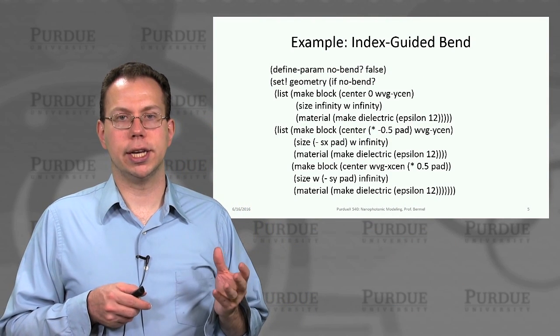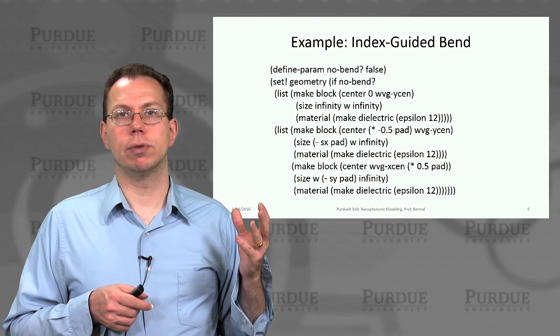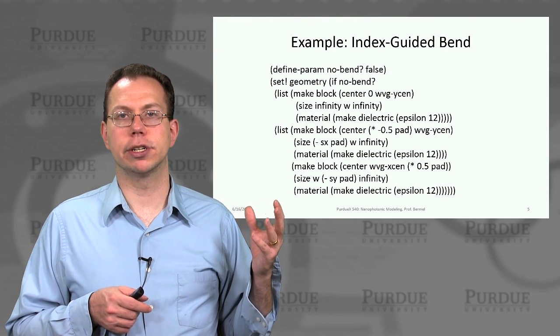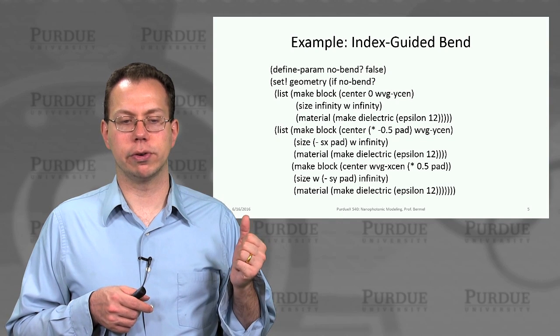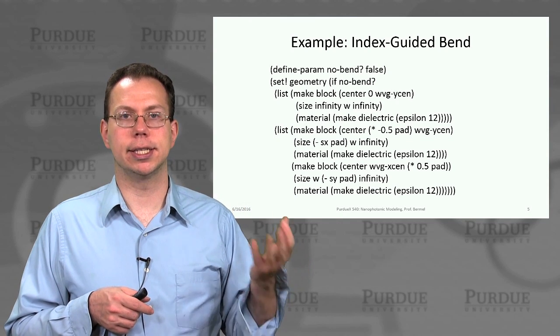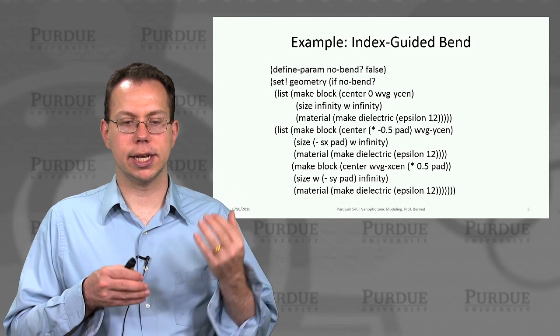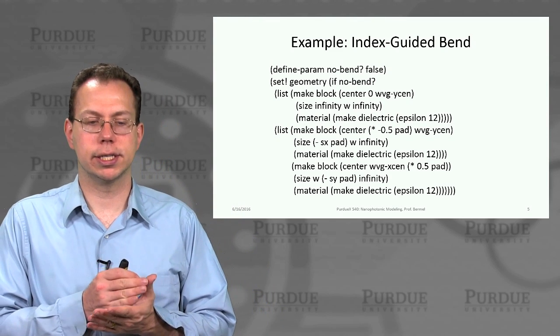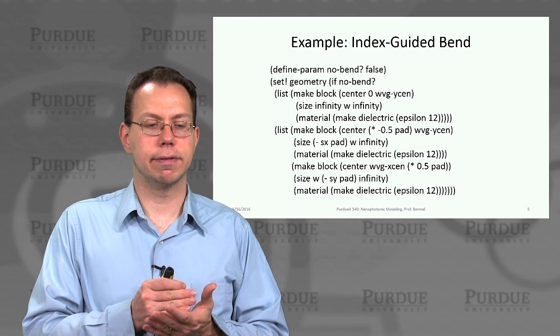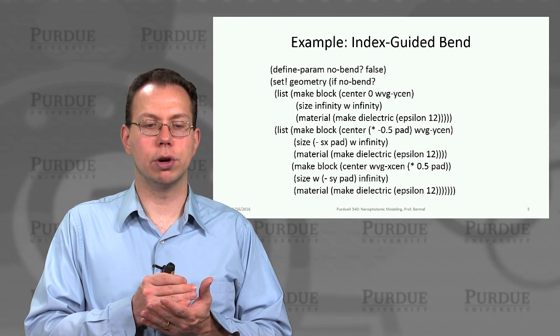And we can actually set up our system at that point once we've seen that's happening to measure what is the transmission as a function of frequency. So this is a modification to the existing file in geometry that we already have. And so the idea is that first we would look at what is the transmission in the absence of a bend. And so we create this no bend condition.